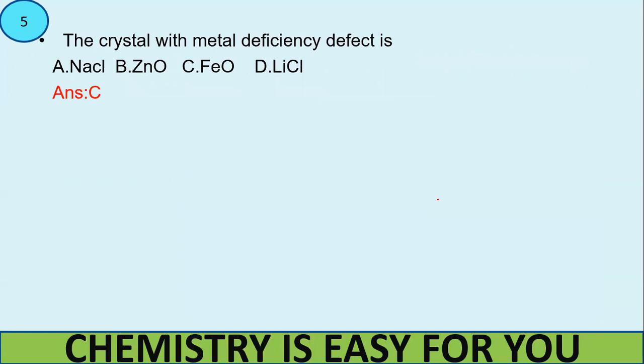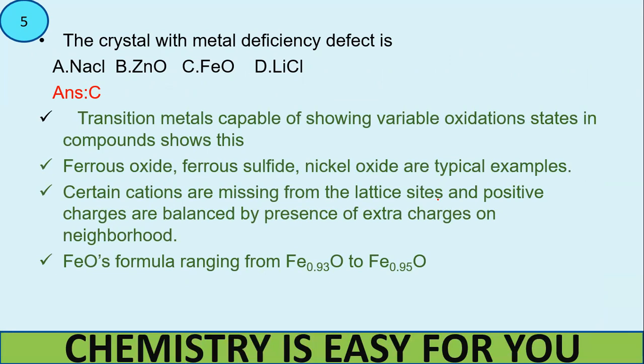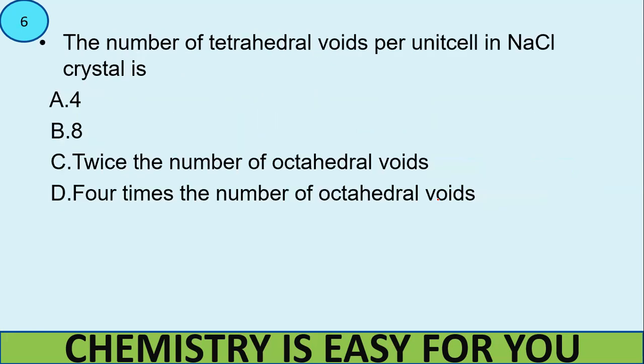Now the crystal structure with the metal deficiency defect is option C, FeO. So now let's take a look at what the metal deficiency defect is. Transition metals can show varying oxidation states. We know that it can start from 0 to 7, can go up to 7. So ferrous oxide, ferrous sulfide, nickel oxide etc are very important examples that oxides can show varying oxidation states. So certain cations will go missing from the lattice sites and other positive charges are balanced by extra charges on the neighborhood. This results in some sort of decimal kind of numbers like Fe 0.93O to Fe 0.95O. We have already learned about this. In such cases, we call it a metal deficiency defect. So defects are important. I'll try to cover one more video of this topic so we can conclude this very nicely, this particular portion.